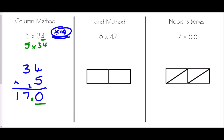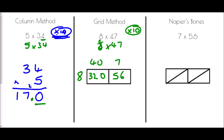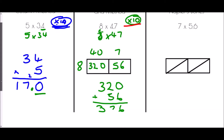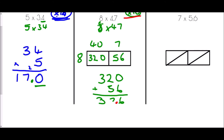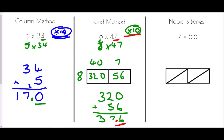For the grid method: 8 times 4.7. Again we convert to 8 times 47, so we've multiplied one value by 10. Set up the grid with 8, and 40 and 7. 8 times 40 is 320, 8 times 7 is 56. Adding those together gives 376. But since we multiplied by 10 at the start, we divide by 10 at the end, giving 37.6. Again, one decimal place in the question and one decimal place in the answer.